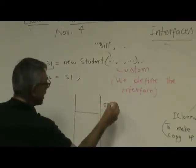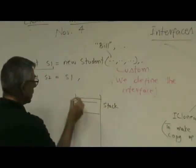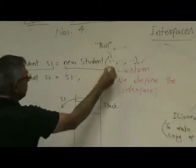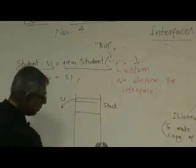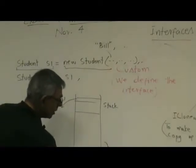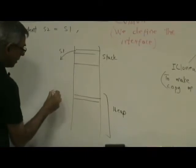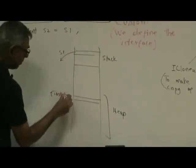It will go to the stack area, create a reference called s1, right? Now let's go to the new student. So now we will go to the heap area and create memory for whatever, first name, whatever, whatever are the private fields, right?